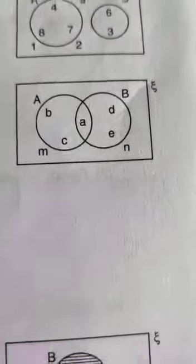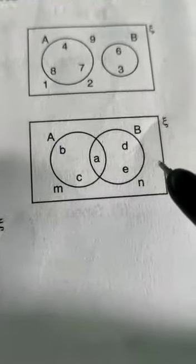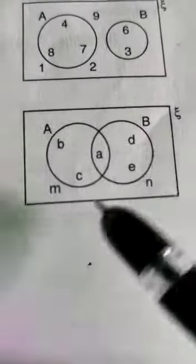In fact, in a Venn Diagram, a closed curve, this figure, represents a set and interior points within the closed curve represent the element of the set.